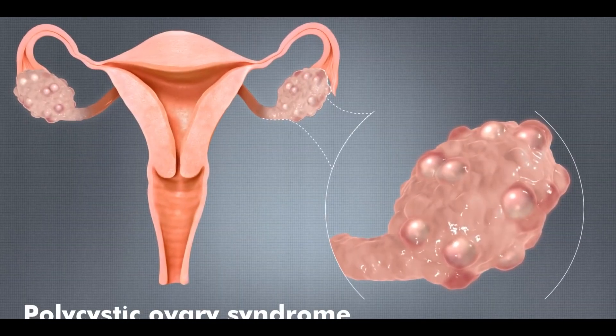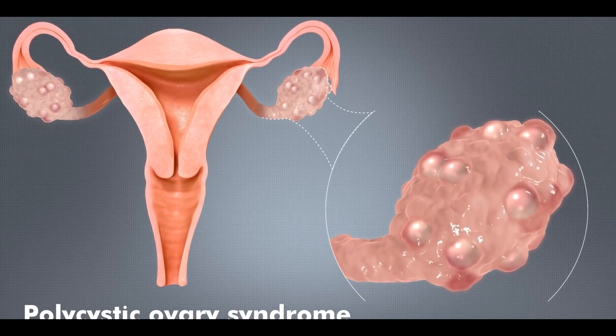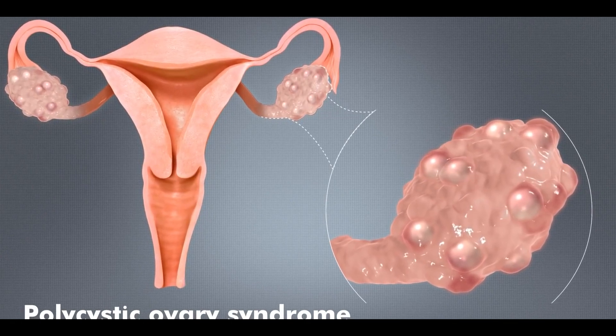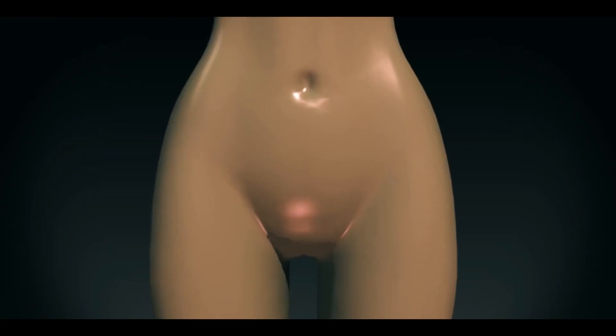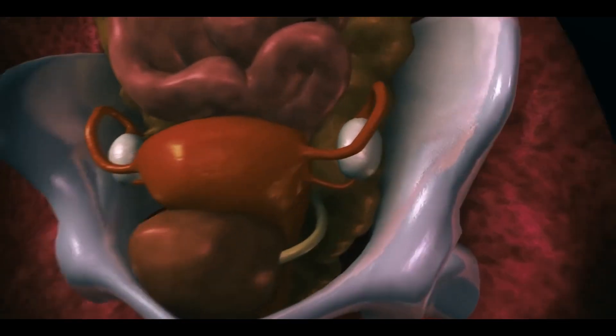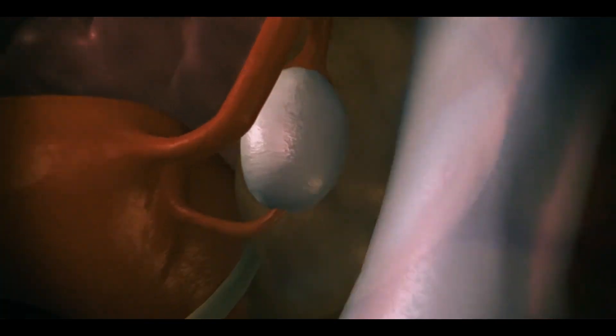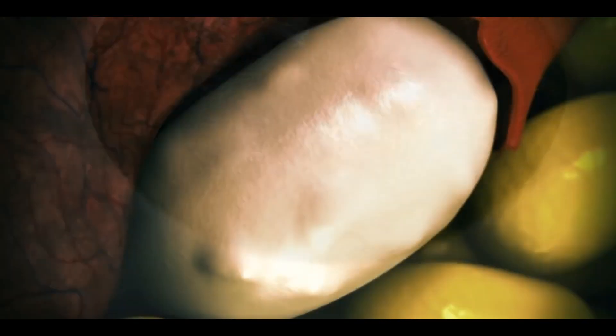Now let's talk about polycystic ovary syndrome. In this condition, numerous cysts form in female ovaries and other parts of the reproductive system, which significantly decrease chances of females to be fertile. Polycystic ovary syndrome usually appears due to hormonal imbalance.